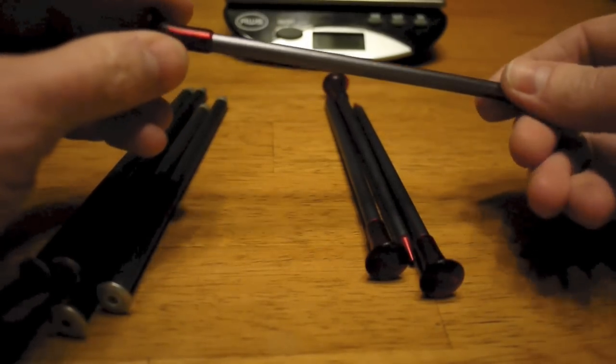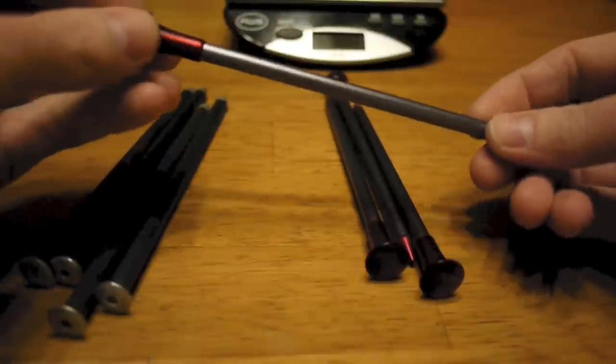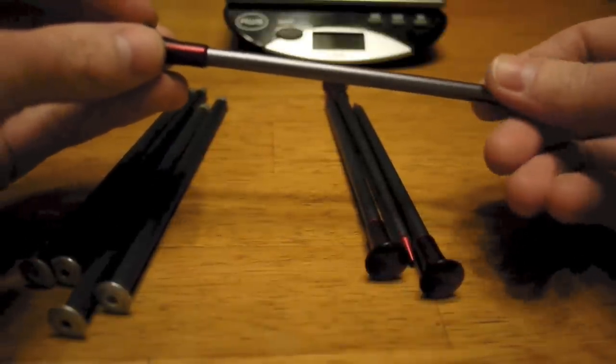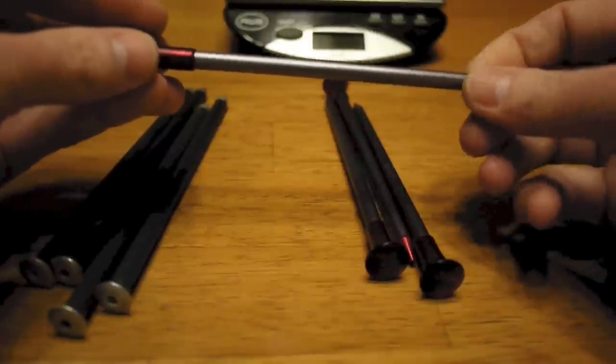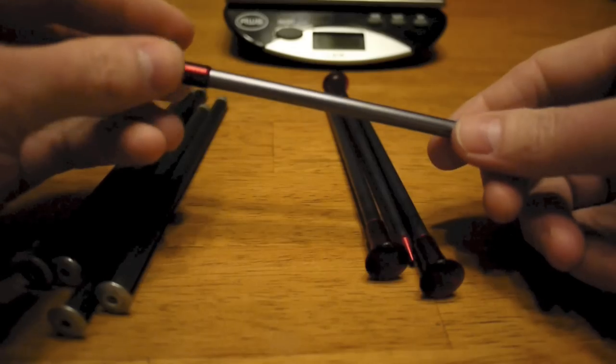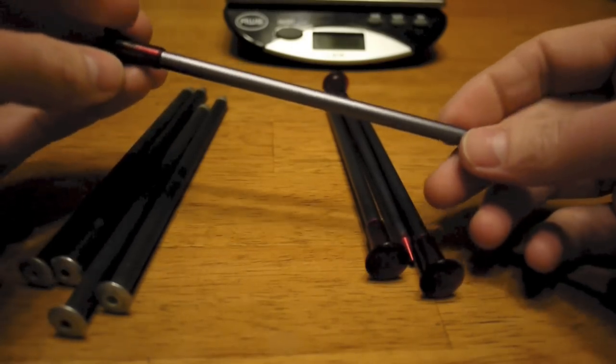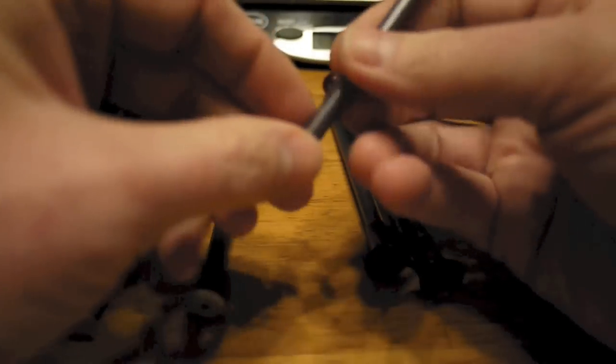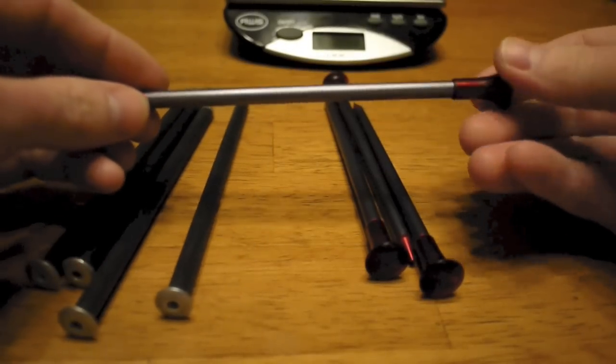These tent stakes are six inches long. They have a diameter of approximately one quarter inch and a circumference of approximately seven eighths of an inch. So they're actually kind of small tent stakes, not super huge as far as the diameter. And then like I said they're $30 for four.